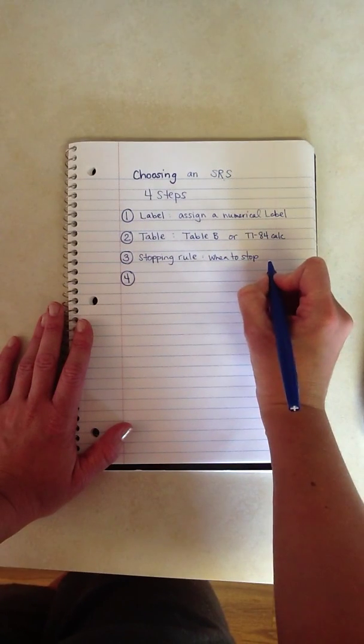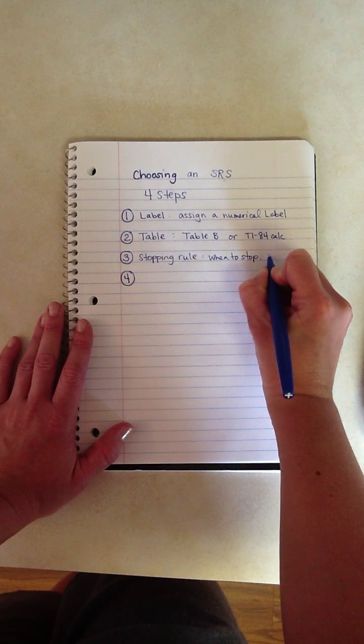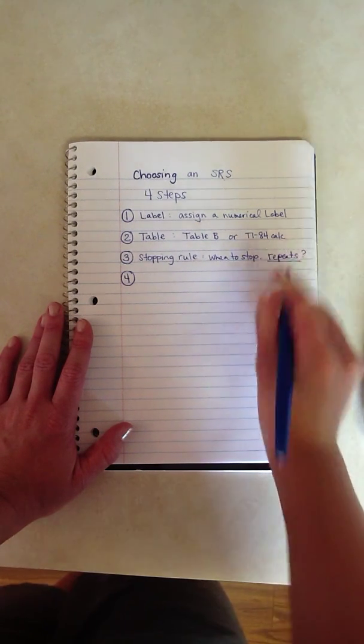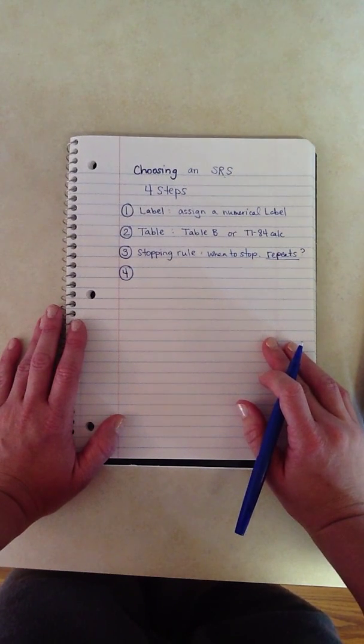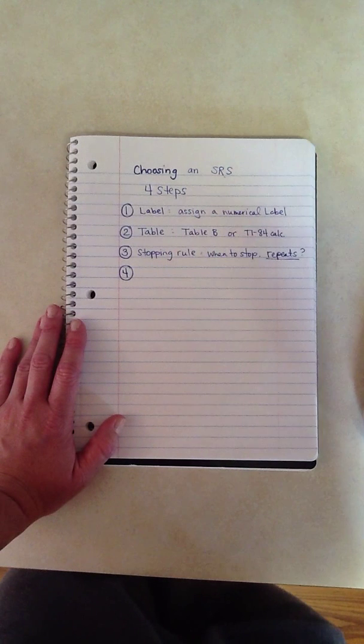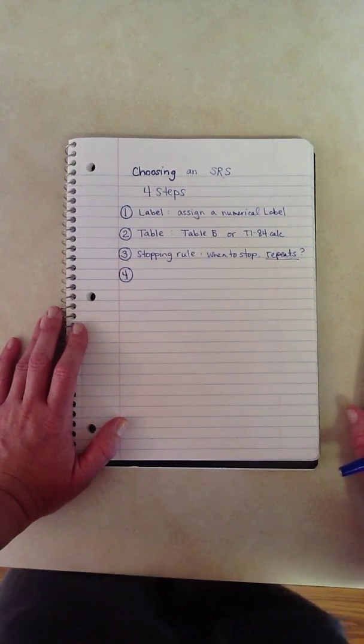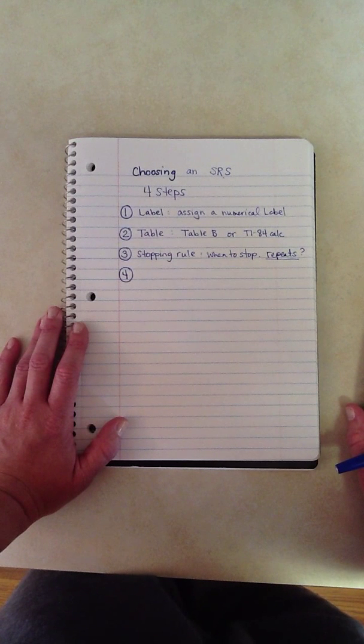And then also, it might be important here to say, what would you do with repeats? A good thing to address would be, for example, if you have this hundred students in your class and the teacher decides to give out a prize. Would the teacher be willing to have the same student win twice? Is that something that you would want? Or maybe not.